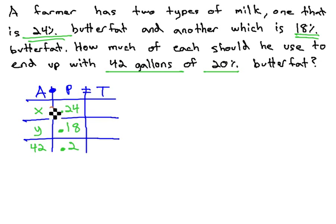We're ready to fill in the rest by multiplying the amount times the percent to get the total. Gives me 0.24x, 0.18y, and 42 times 0.2 is 8.4.